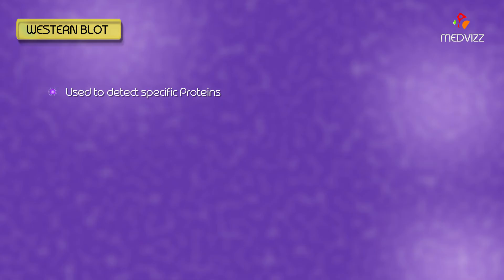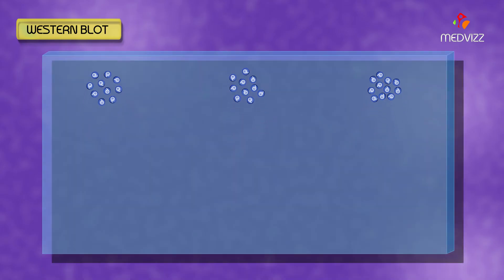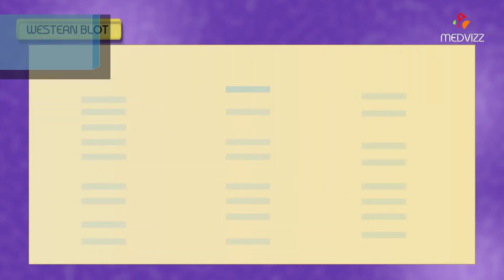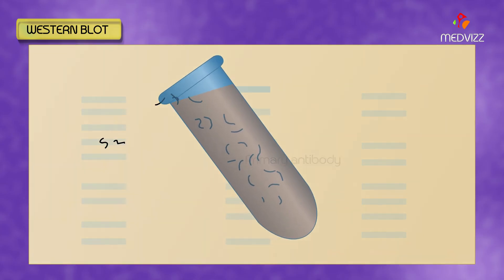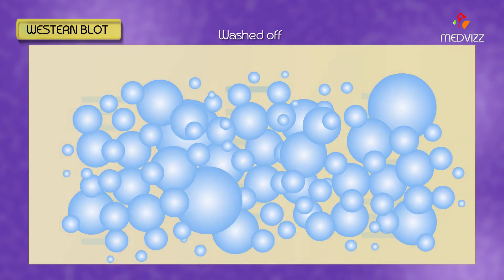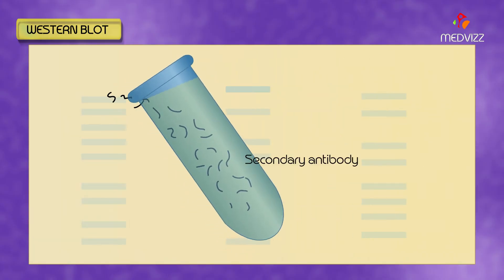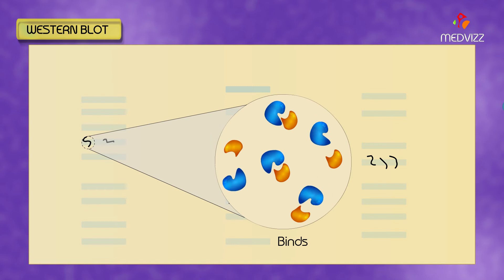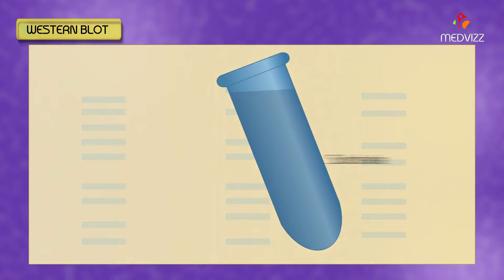Western blot is used to detect specific proteins. It is similar to other types of blots, but protein-specific antibodies are used for detection. After the proteins are electrophoretically separated and transferred to a filter, a primary antibody is applied. The excess primary antibody is washed off, and a secondary antibody is applied. The secondary antibody recognizes and binds to the primary antibody.